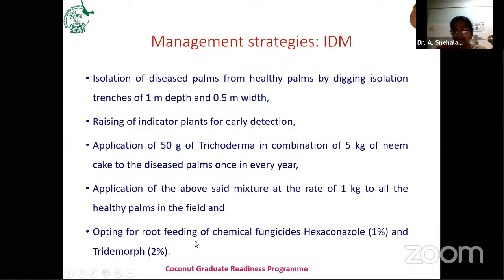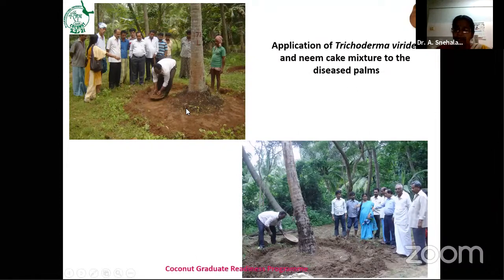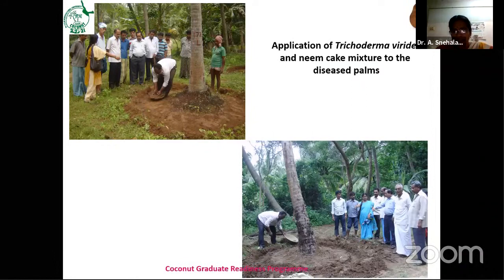Raise indicator plants like redgram or bengalgram to detect infection early. If there is no infection, don't bring coconut seedlings from infected nurseries. Finally, apply 50 grams of Trichoderma in combination with 5 kg of neem cake to diseased plants once a year. For application, remove all weeds surrounding the trunk, apply over the entire area, then irrigate and maintain wet conditions for three to four days to establish the Trichoderma in the coconut basin. For chemical management, hexaconazole 1% root feeding can be done.